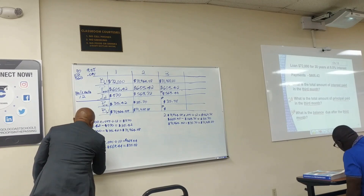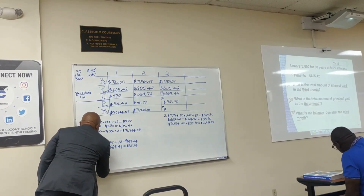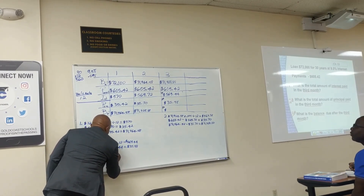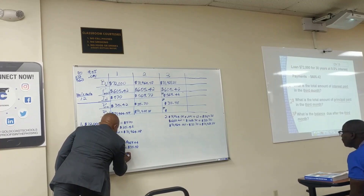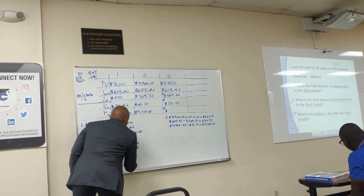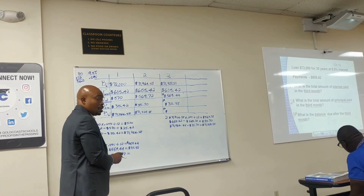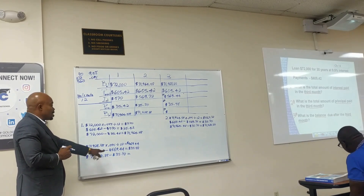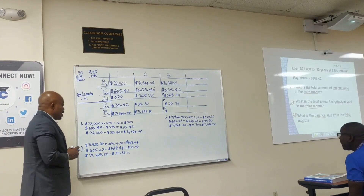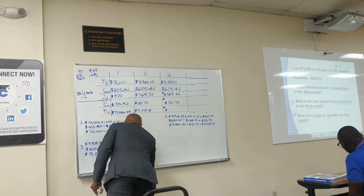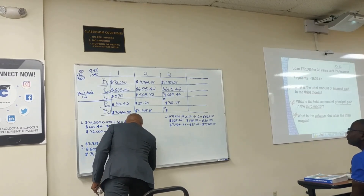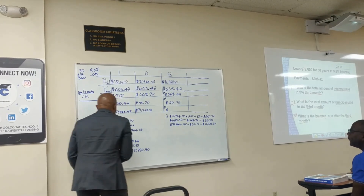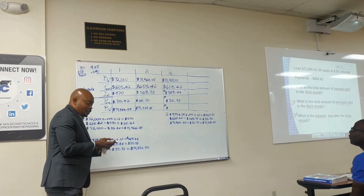For the third answer — the balance after the third month — I take $71,928.88 minus $35.98, which equals $71,892.90. That is the remaining balance after the third monthly payment. Give this gentleman a round of applause!